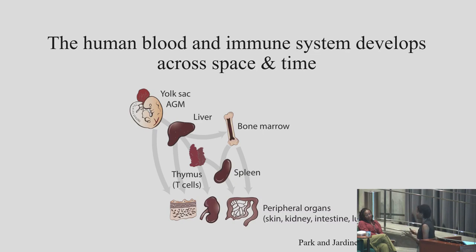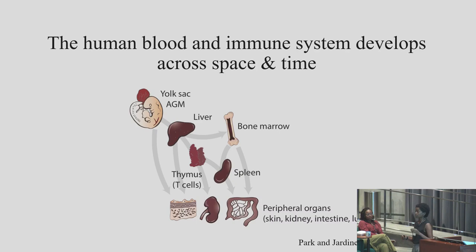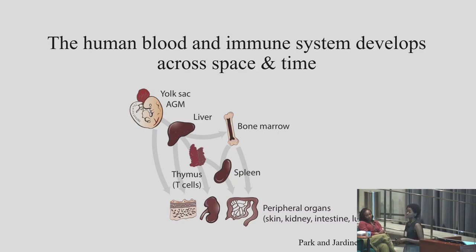The bone marrow is a really important site in the third trimester, childhood, and adult life — your bones provide your blood and immune cells in response to injury and for hemostasis. Progenitors then seed the thymus and the spleen, which are important for making white blood cells competent — selecting T and B cells respectively — and also peripheral organs. This is a really distributed, complex system. There are key differences between humans and model organisms; for example, mouse bone marrow hematopoiesis occurs postnatally, not from the second trimester onward.